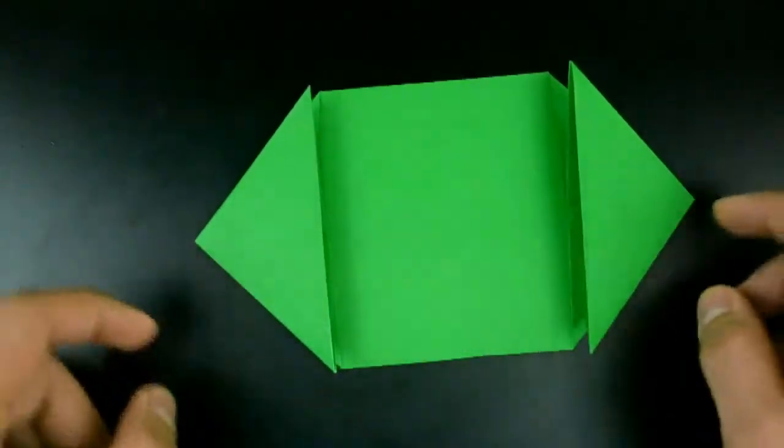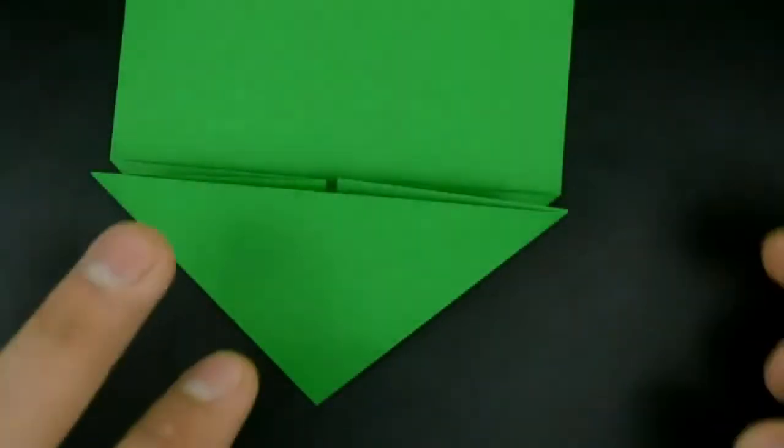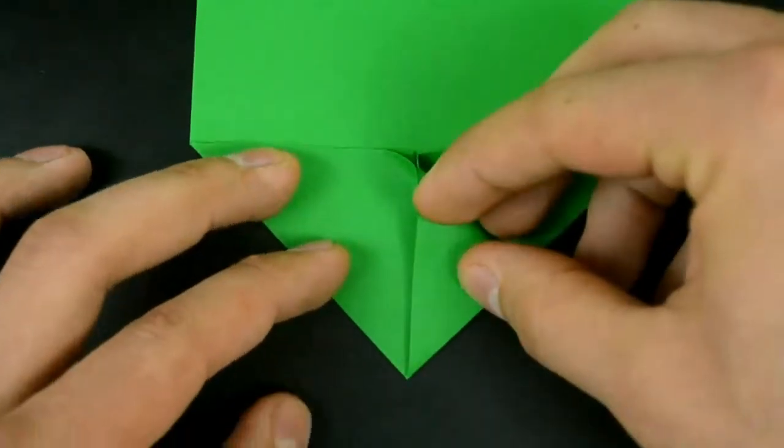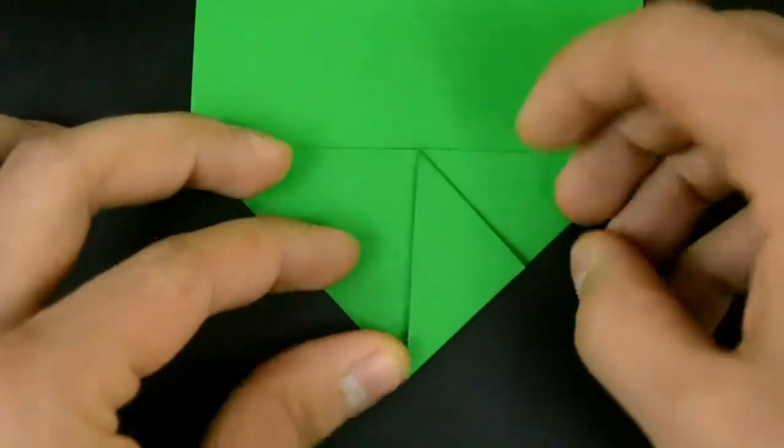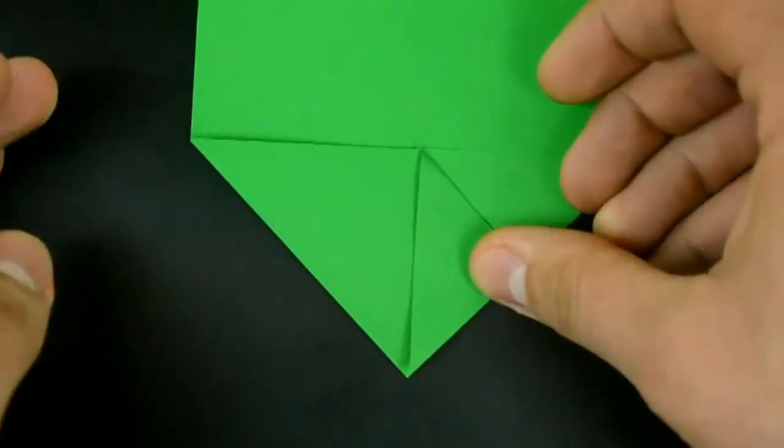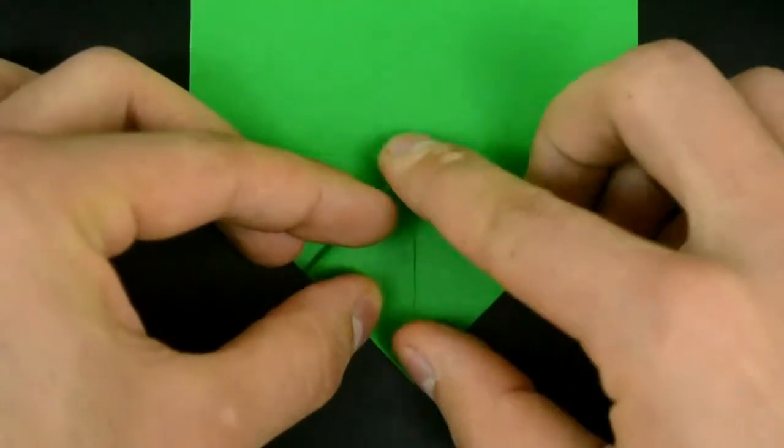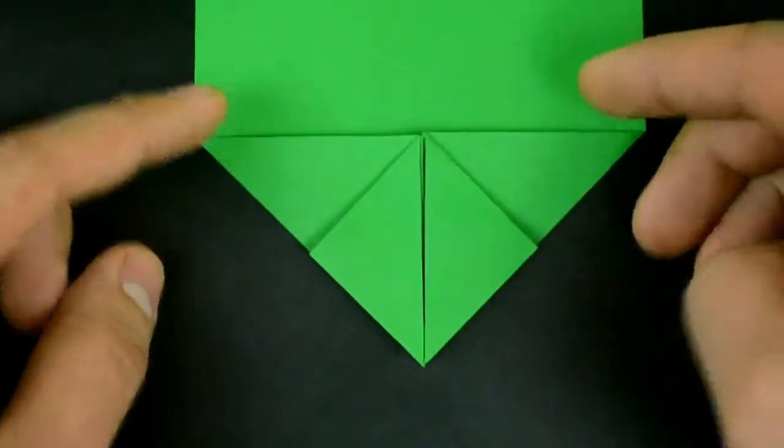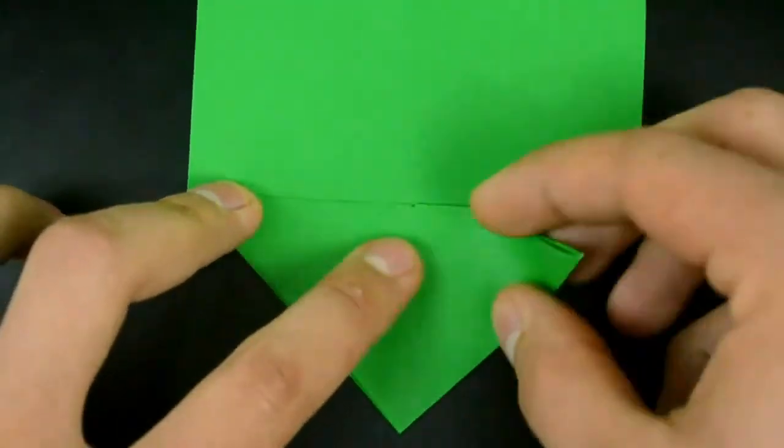Now let's rotate in this position and fold this flap down, in line with the middle. The other flap as well. Now rotate again and repeat on the other side, both flaps down.